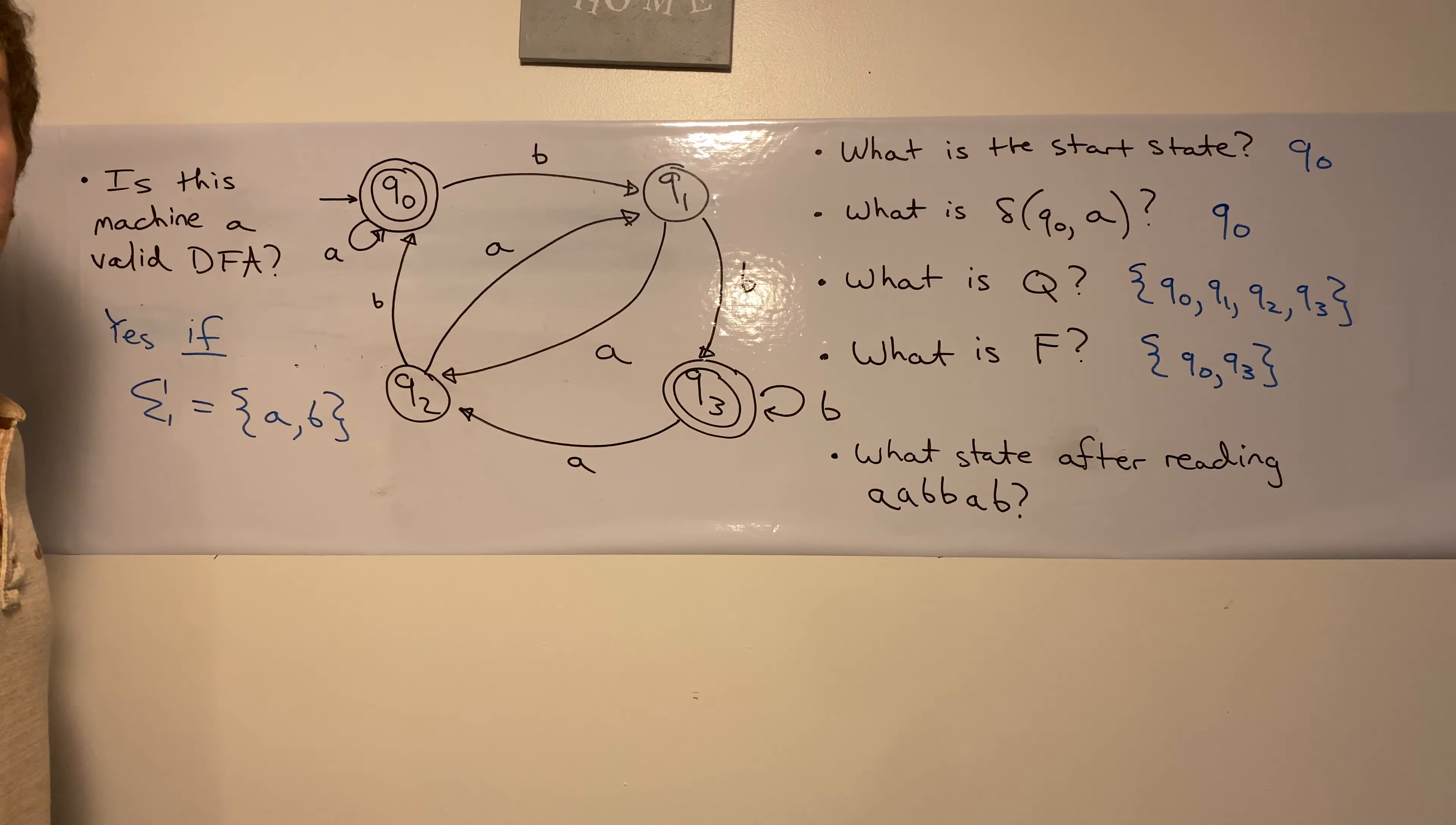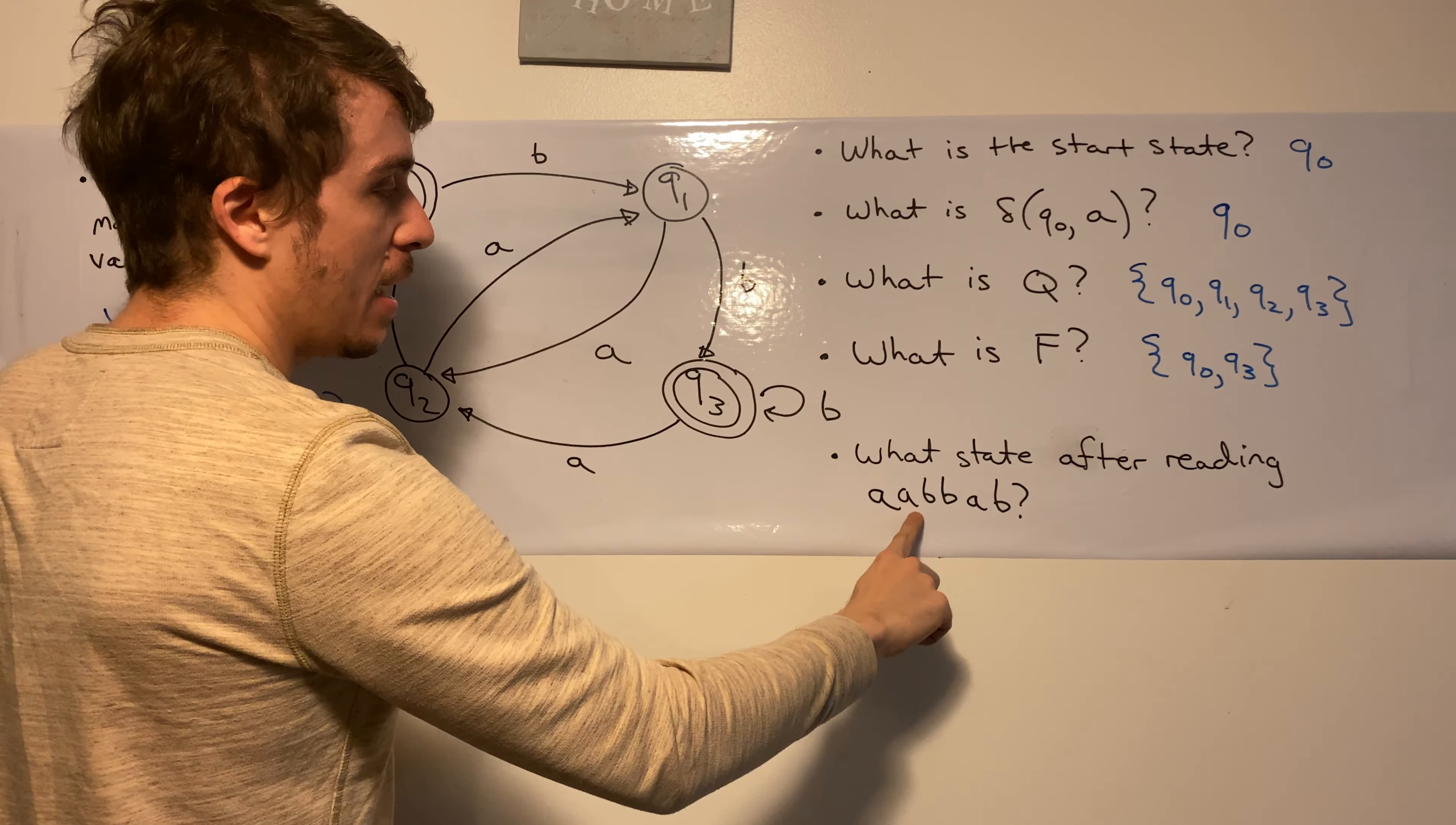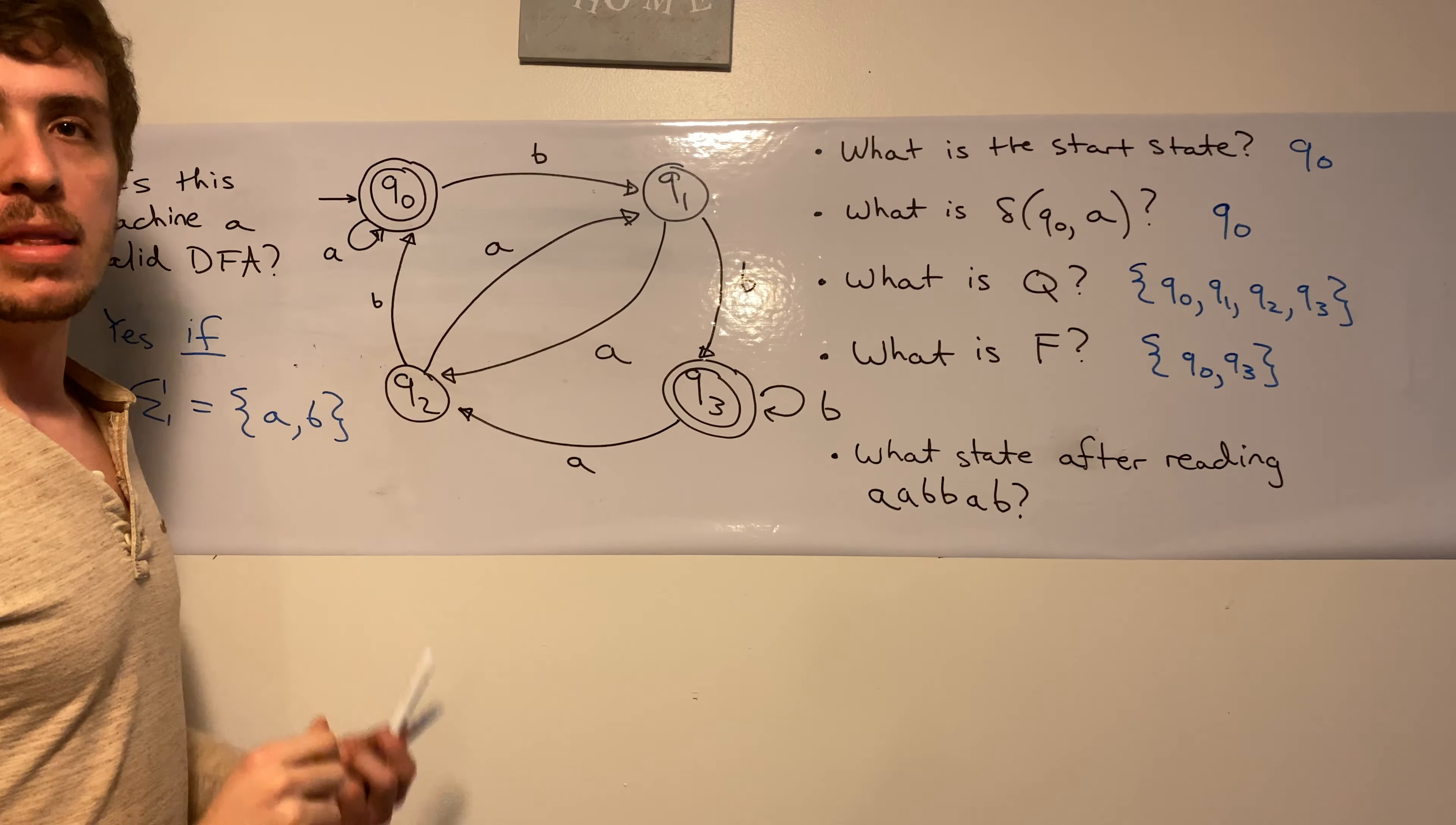And the final question about this DFA is, what state are we in after reading the input A, A, B, B, A, B? So how can we figure that out? Well, let's see.